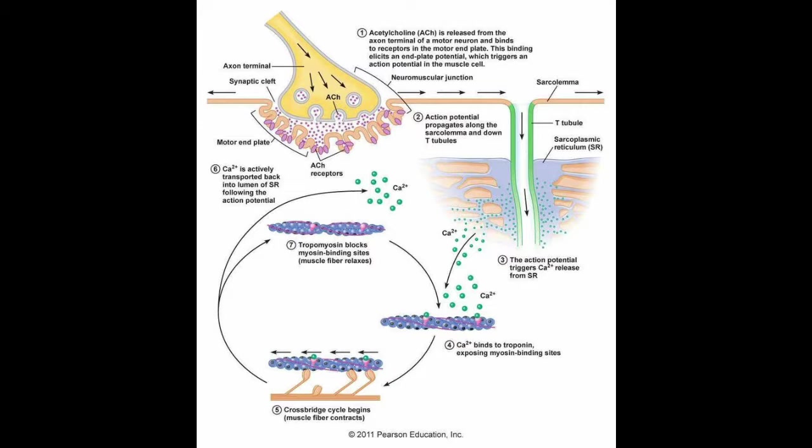An action potential is formed and travels down the membrane of the muscle fiber. It reaches the interior of the cell by traveling down transverse tubules. It is able to reach the sarcoplasmic reticulum, which is essentially a pouch that contains calcium, and causes its gates to open.